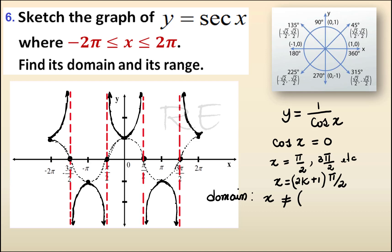The domain is all real numbers except the odd integers of π/2. X cannot be (2k + 1) times π/2. And the range goes from negative infinity to negative 1 included, union, 1 included to positive infinity.